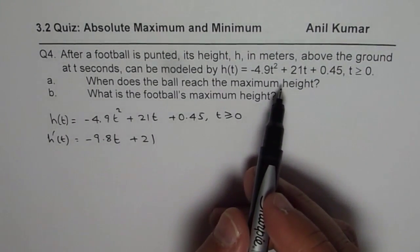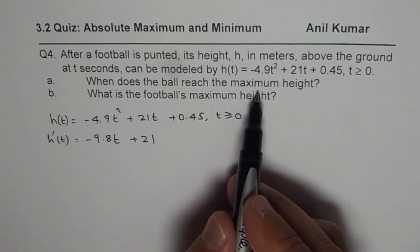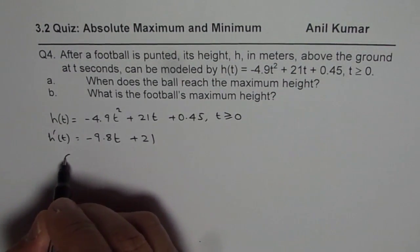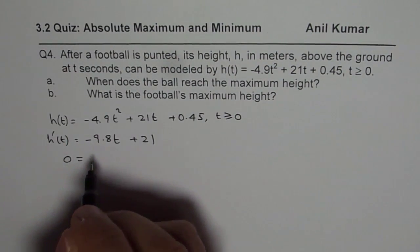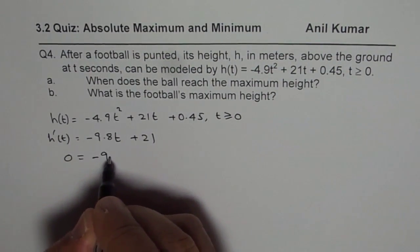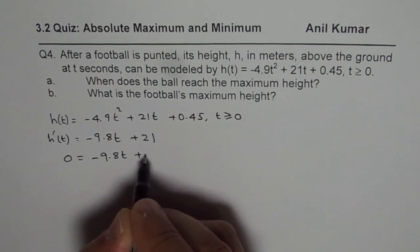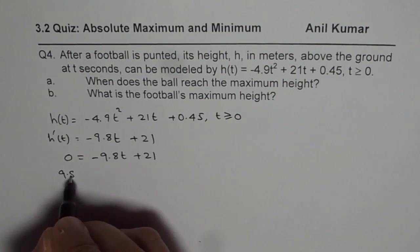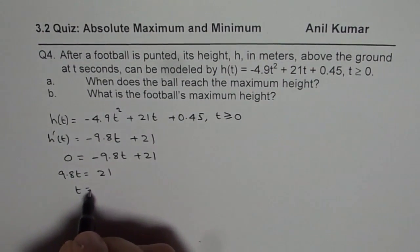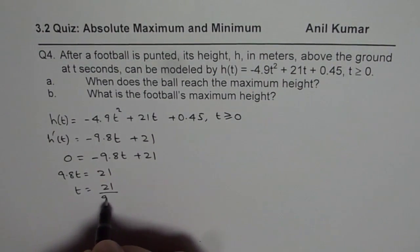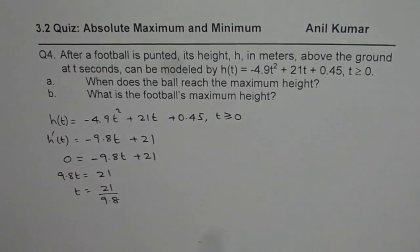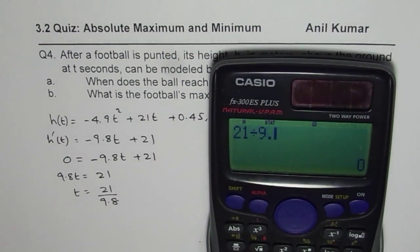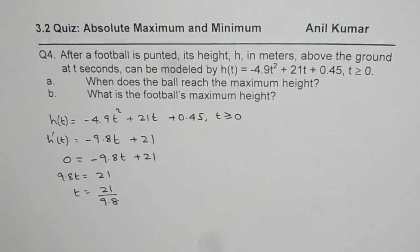At the turning point where the maximum is reached, h'(t) should equal 0. We are finding the critical number, so we set -9.8t + 21 = 0. Solving for t: 9.8t = 21, so t = 21 ÷ 9.8, which gives us approximately 2.14 seconds.